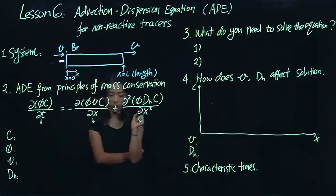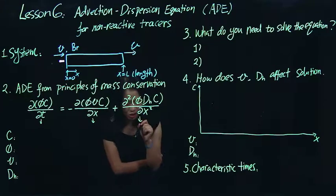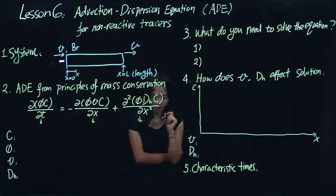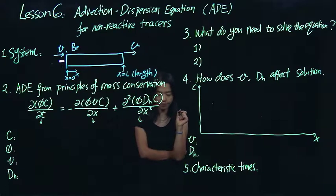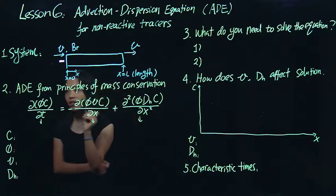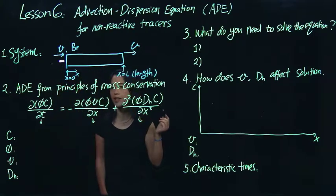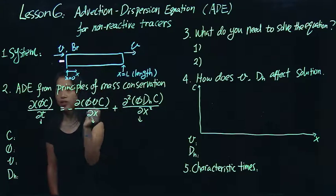So how do we solve, or how do we mathematically solve this kind of equation and get a solution so we know the concentration of this chemical species in different times and different locations? And this is what we are going to talk about, which is the advection dispersion equation, we call it ADE, without a reaction term.